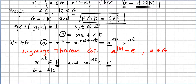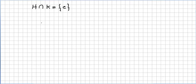Now we move to proving that H intersection K equals the identity. We pick an element X that is in H intersection K.